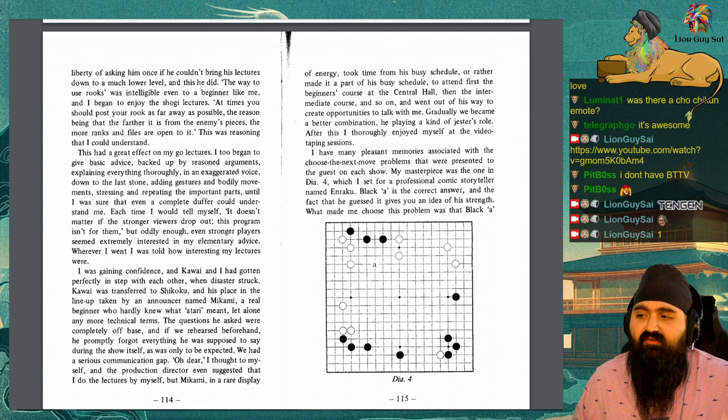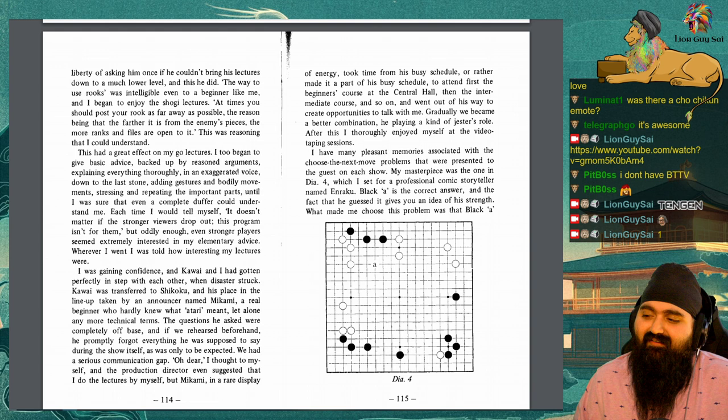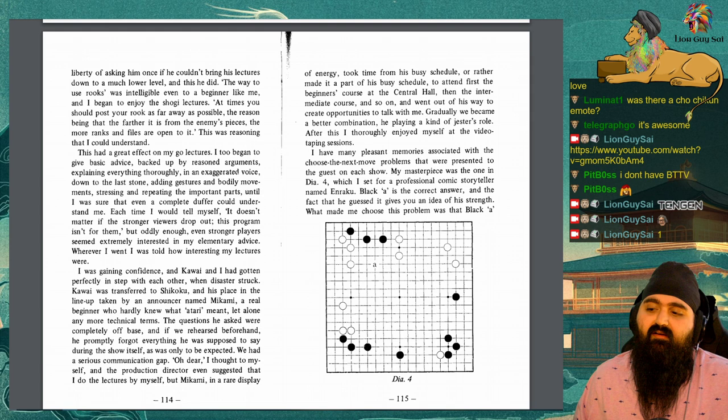This had great effect on my go lectures. I too began to give basic advice, backed up by reasoned arguments, explaining everything thoroughly, in an exaggerated voice, down to the last stone, adding gestures and bodily movements, stressing and repeating the important parts, until I was sure that even a complete duffer could understand me. Each time I would tell myself, it doesn't matter if the stronger viewers drop out, this program isn't for them. But oddly enough, even stronger players seemed extremely interested in my elementary advice. Wherever I went, I was told how interesting my lectures were. I was gaining confidence, and Kawai and I had gotten perfectly in step with each other, when disaster struck.